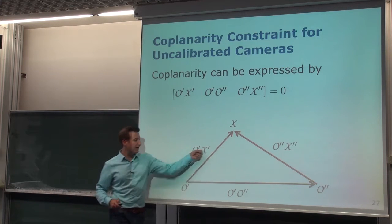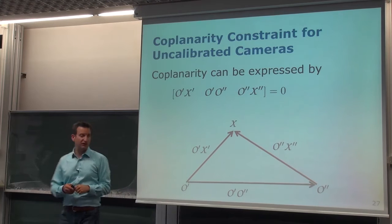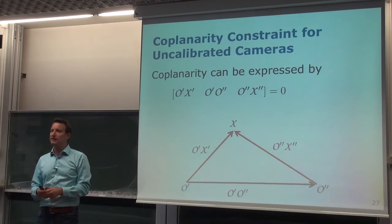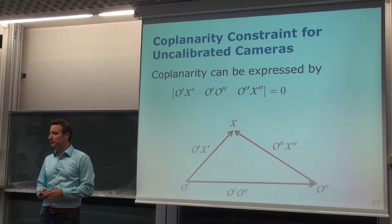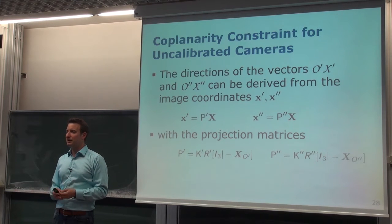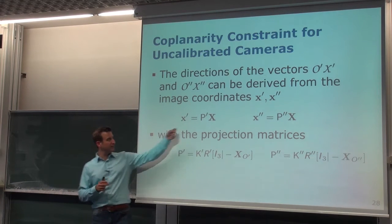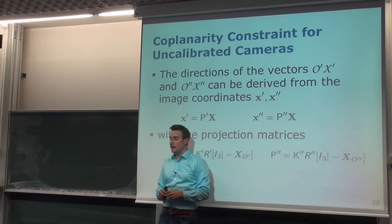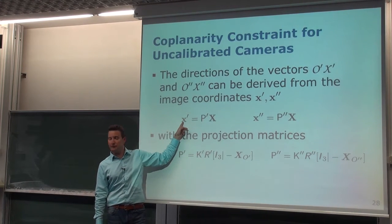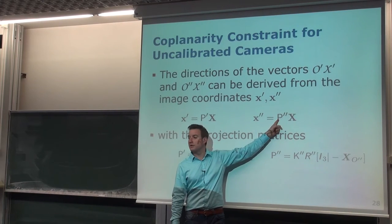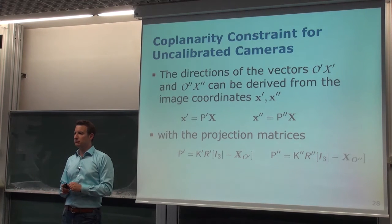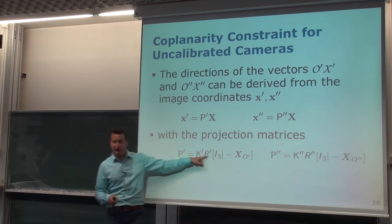The first step is to describe those vectors. We know we have an uncalibrated camera with a projection matrix P for the first camera and for the second camera. It maps the 3D point X to image point x prime in camera one, and through the projection matrix of the second camera to x double prime in the second image.